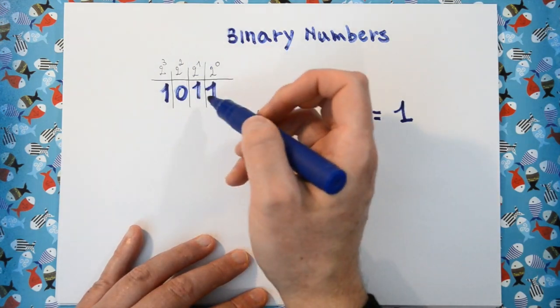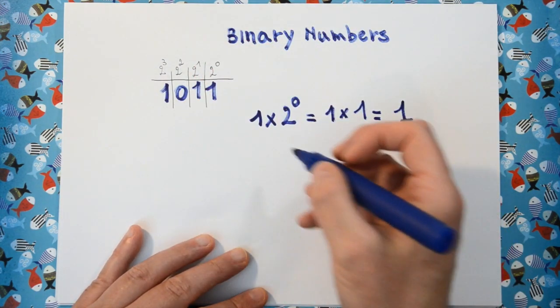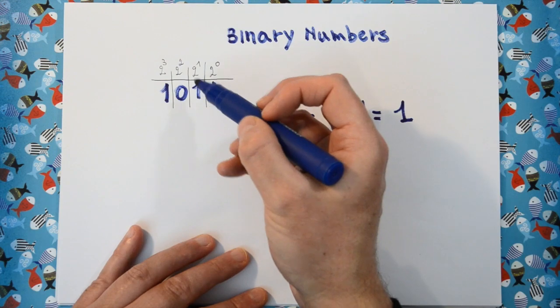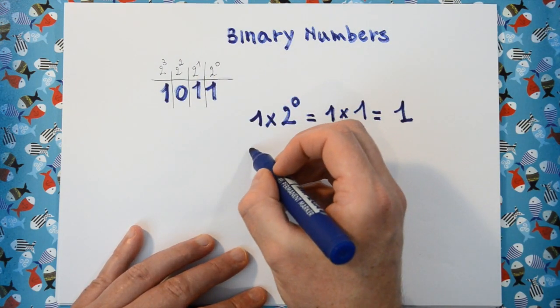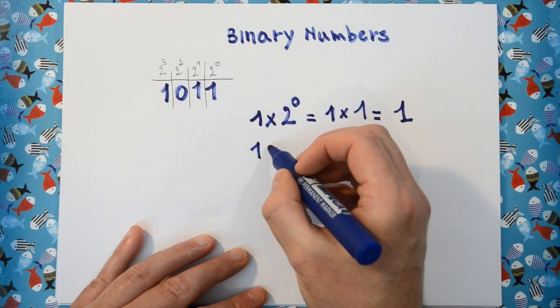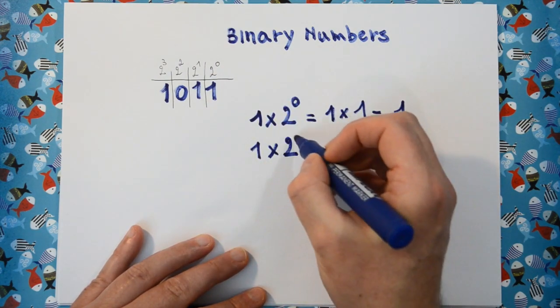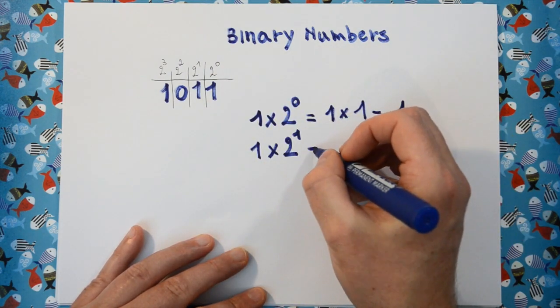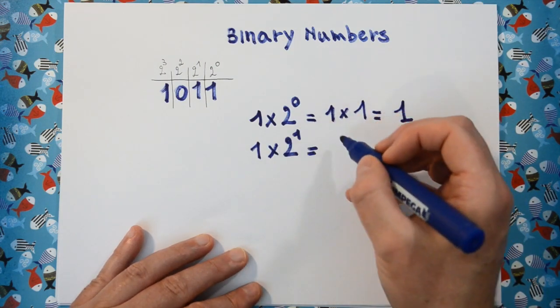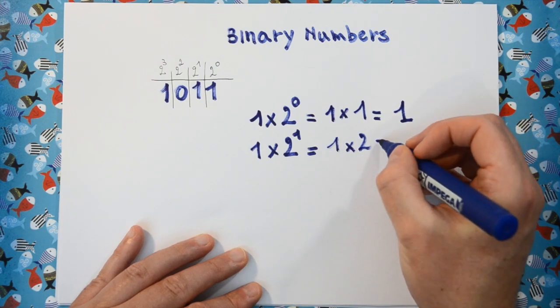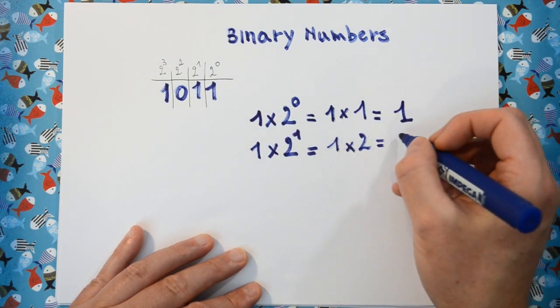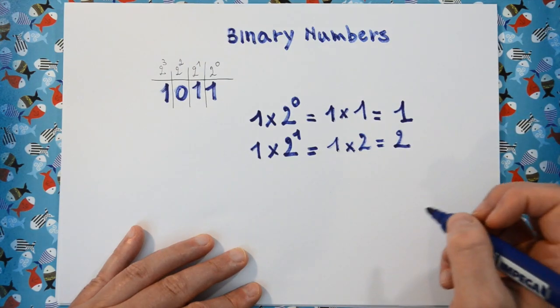The second bit or the second column in a binary number stands for the amount of times we have 2 to the power 1. So that's 1 times 2 to the power 1, and 2 to the power 1 is just 2. So this is 1 times 2 equals 2.